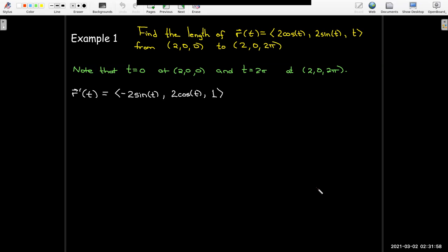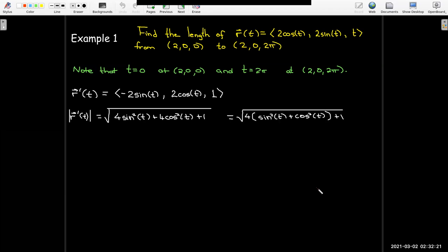So what do I need to do? Find the length of r prime of t. So first let's find r prime, take the derivative of each of the component functions, and then we will take the square root of the sum of the squares. Now here we have sines and cosines. So we have an expression with 4 sine squared t plus 4 cosine squared t. I can factor out the 4, and I recognize that sine squared t plus cosine squared t is just 1. So the length here is actually constant. The length of r prime of t is a constant radical 5.